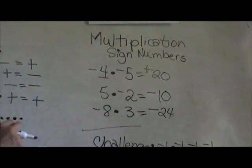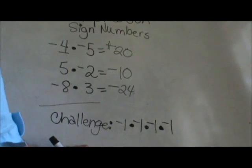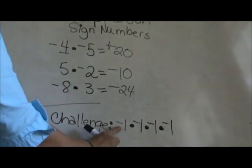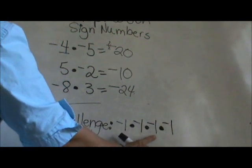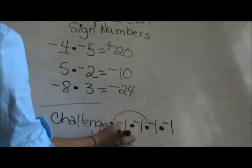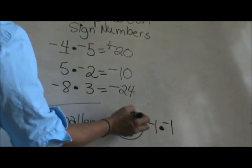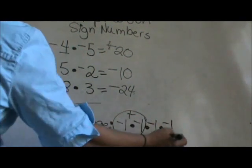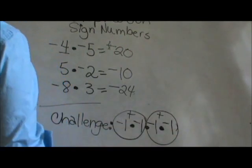Let's look at the challenge problem now and see how they're going to pair up. I have negative 1 times negative 1 times negative 1 times negative 1. Well, if I pair my negatives up, these two ones are going to pair up and become positive.